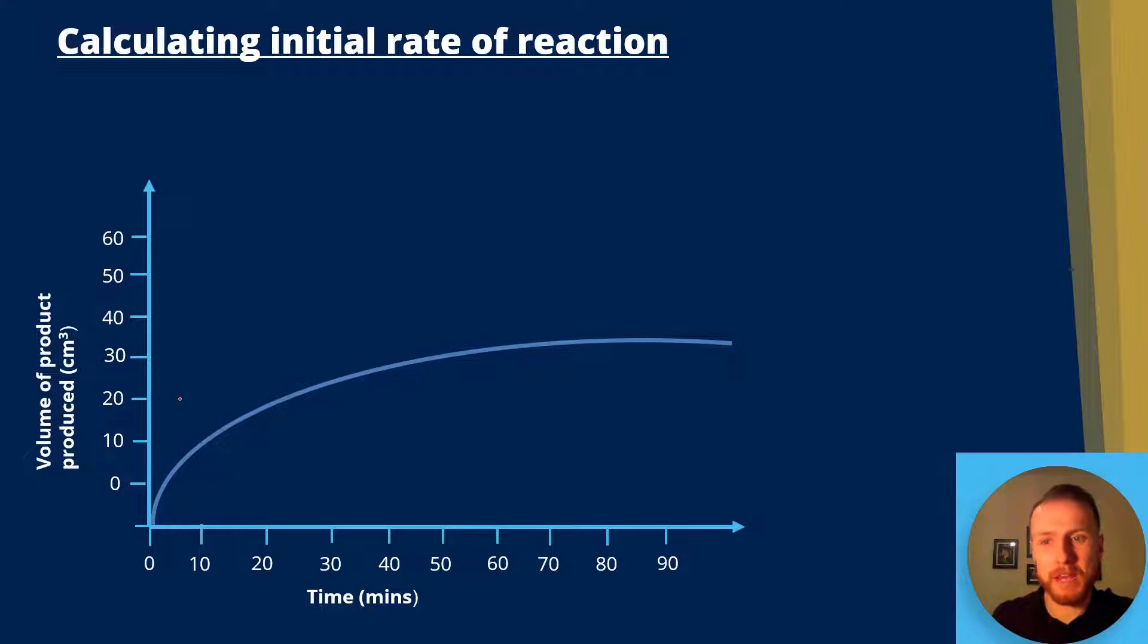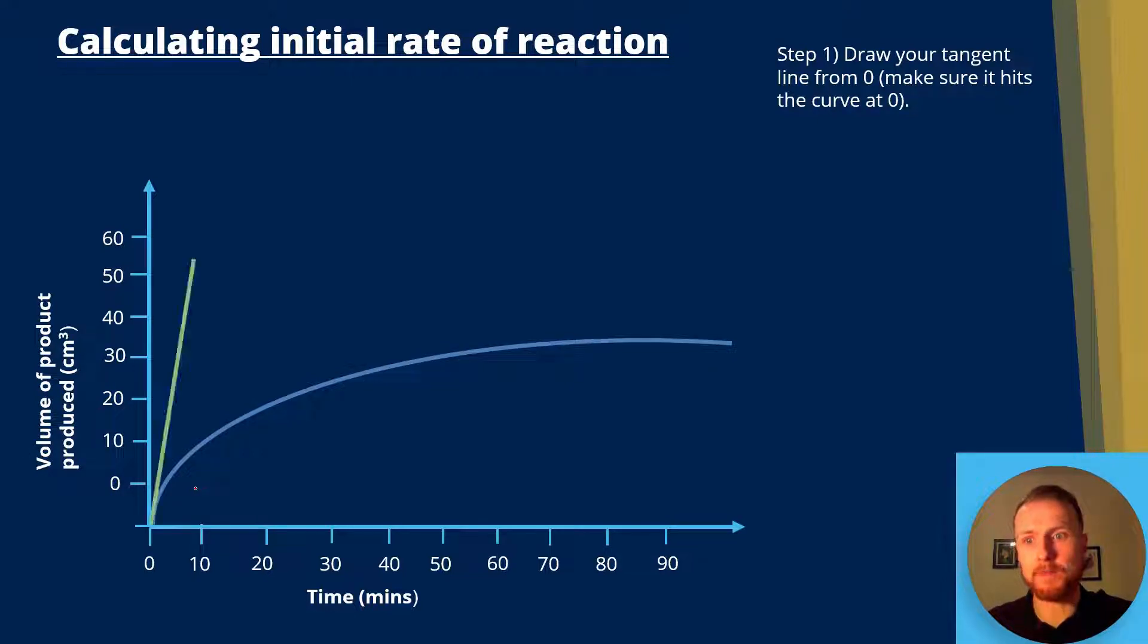Now I've added in some scales. So what do we do if we want to calculate the initial rate of reaction? Well, step one is to draw your tangent line from zero and make sure it hits the curve at zero. So it's going to look like this. And I've made sure that my tangent line is just touching the curve here. And the initial rate of reaction is very steep. So our line is angled very close to vertical.